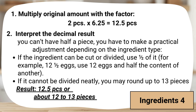Ingredient 4 — Step 1: Multiply by the conversion factor: 2 pieces × 6.25 = 12.5 pieces. For 25 servings, the recipe now needs 12.5 pieces of this ingredient. Step 2: Interpret the decimal result. Because you can't have half a piece in most ingredients — like eggs, fruits, and others — you have to make a practical adjustment depending on the ingredient type. If the ingredient can be cut or divided, use one half of it (e.g., 12 and a half eggs: use 12 eggs and half the content of another). If it cannot be divided neatly, you may round up to 13 pieces to ensure you don't fall short. Final answer for ingredient 4 is 12.5 pieces, or about 12 to 13 pieces depending on the ingredient type. The original recipe used 2 pieces for 4 servings; to make 25 servings, multiply by 6.25, giving 12.5 pieces — or 13 pieces if you round up for practicality.